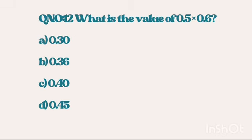Question number 12. What is the value of 0.5 multiplied by 0.6? The answer is 0.30.